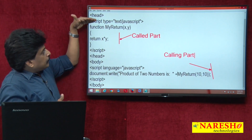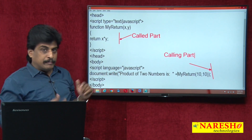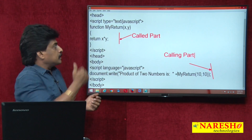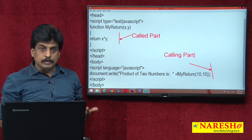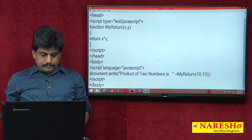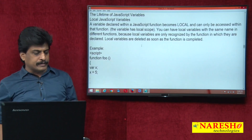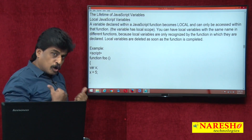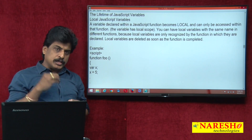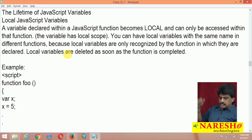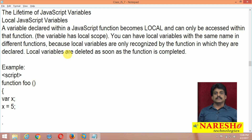You can declare in the script area and call from the script area. Now, the lifetime of JavaScript variables: there are local JavaScript variables and global JavaScript variables. If you declare a variable within a function, it becomes a local JavaScript variable. A variable declared within a JavaScript function becomes local and can only be accessed within that function — the variable has local scope.